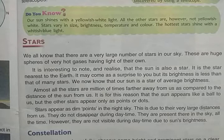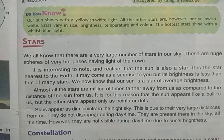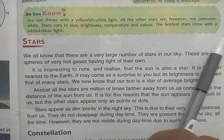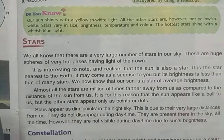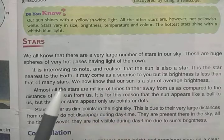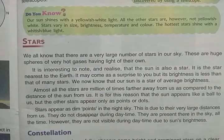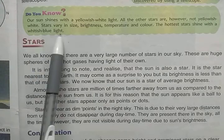Not all stars are yellowish-white. Stars vary in size, brightness, temperature, and color. Different stars have different brightness, size, temperature, and color. The hottest stars shine with a whitish-blue light, while our Sun, being of average brightness, shines with yellowish-white light.